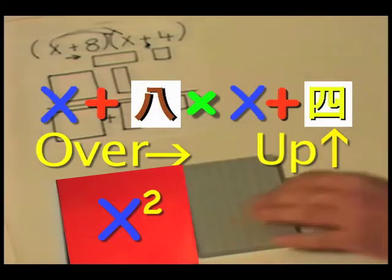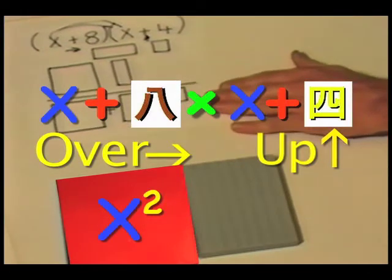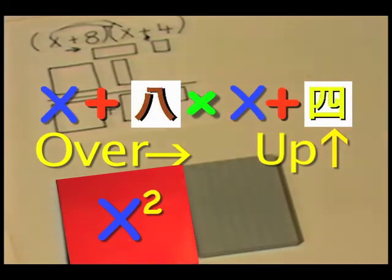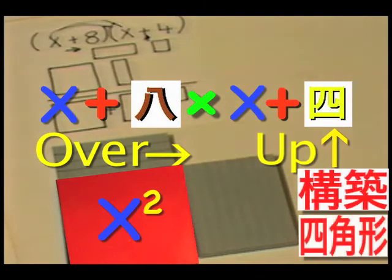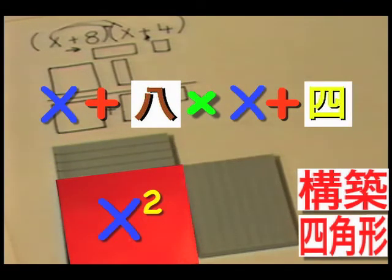We must extend our rectangle up 4 units. Now, we must fill in the corner. We must place the rectangle in the corner that is over 8 and up 4.